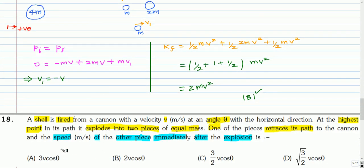This is the next question. A shell is fired from a cannon with velocity V meters per second at an angle theta with the horizontal. At the highest point in its path, it explodes into two pieces of equal masses. One of the pieces retraces its path to the cannon, and the speed of the other piece immediately after explosion is? You can pause the video and attempt this question.